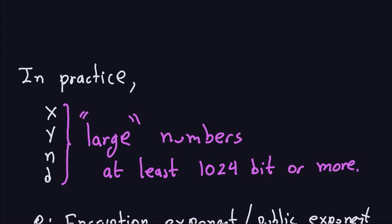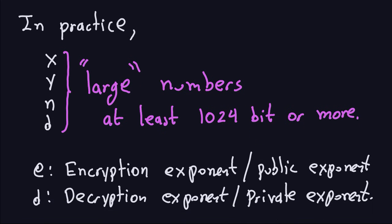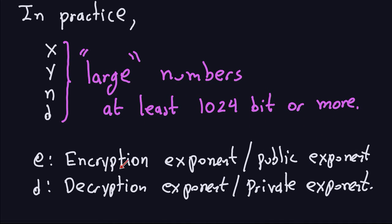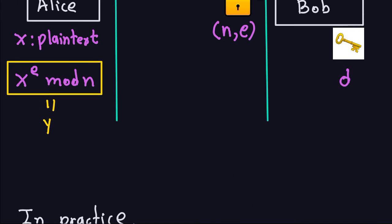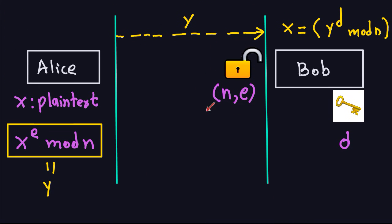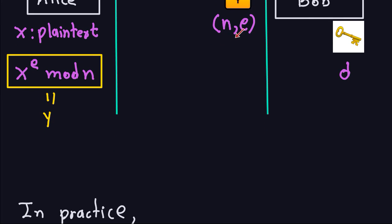We noted that E is called the encryption exponent or public exponent, for obvious reasons since it's public, and D is the decryption exponent. The public key E is public, so Eve who is always listening has access to it, but she cannot decrypt the message unless she has the private key, which only Bob has. The public key is a pair of numbers N and E, and the private key is just one number D.